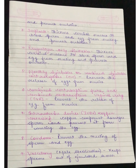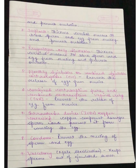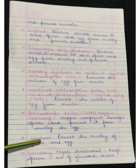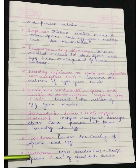Next are the combined contraceptive patch and combined contraceptive vaginal ring — they prevent the release of eggs from the ovaries. The intrauterine devices that are copper-containing — these copper components damage sperm and prevent it from meeting the egg. Next are the condoms, which prevent the meeting of sperm and eggs.